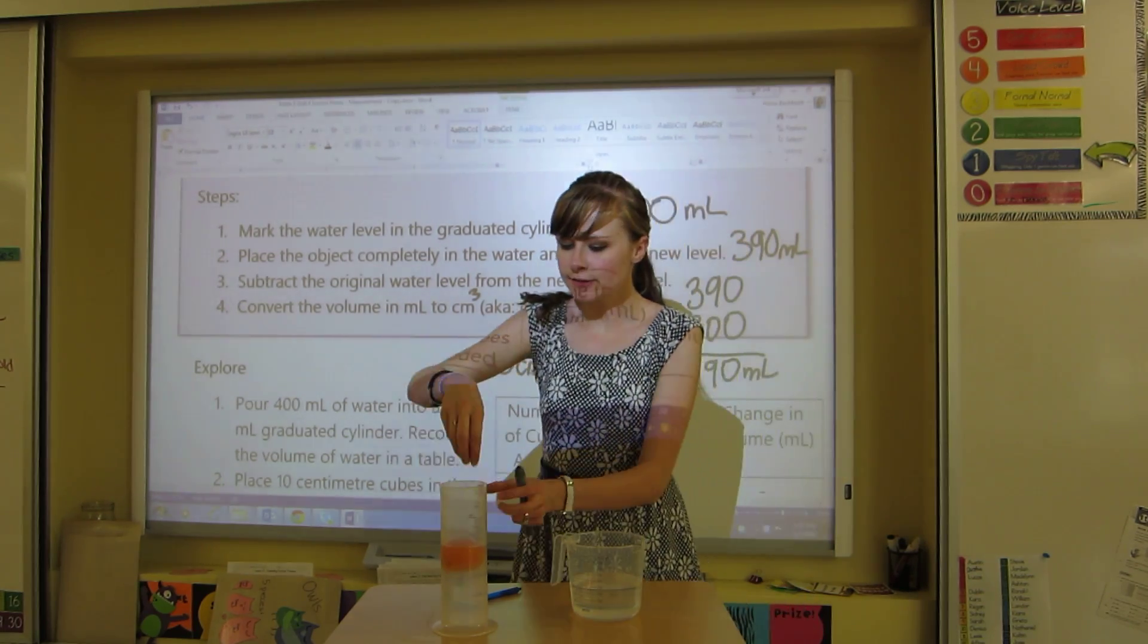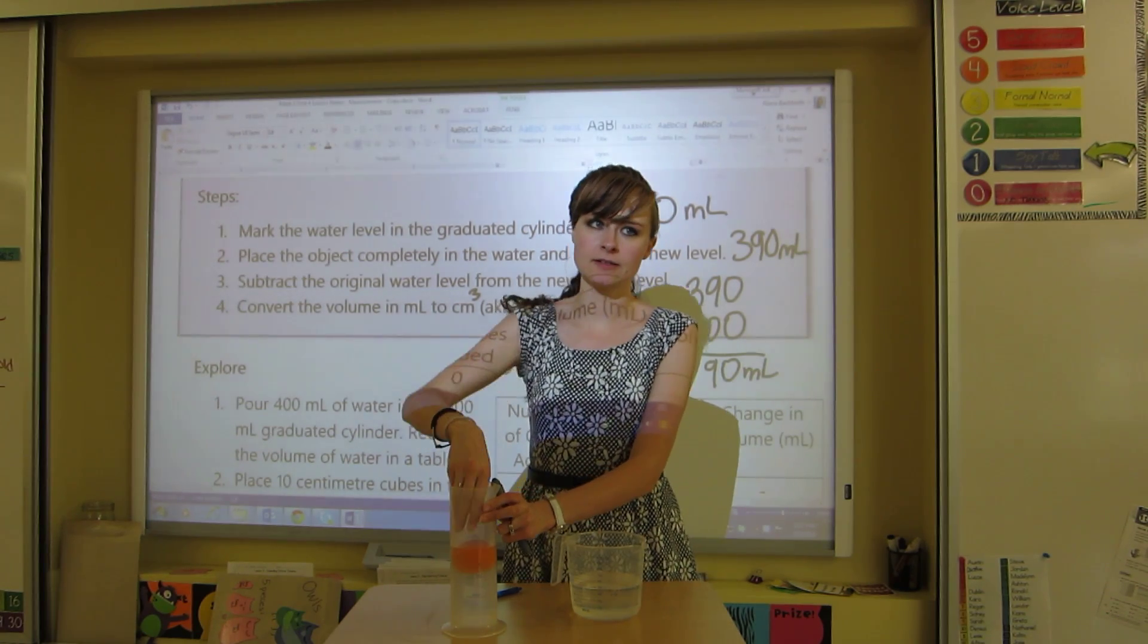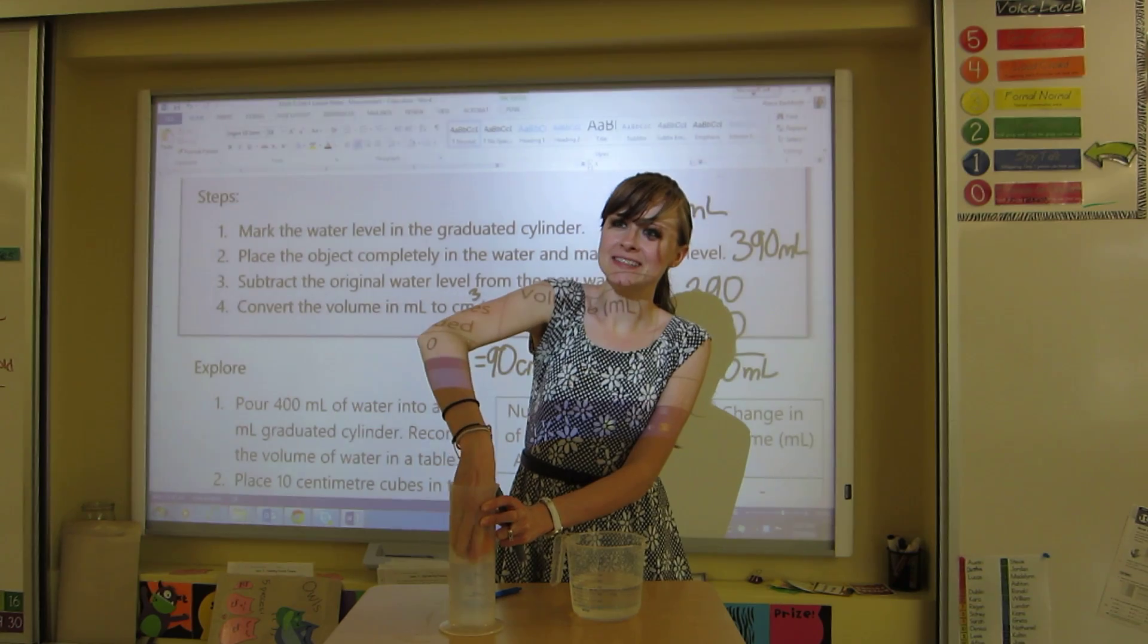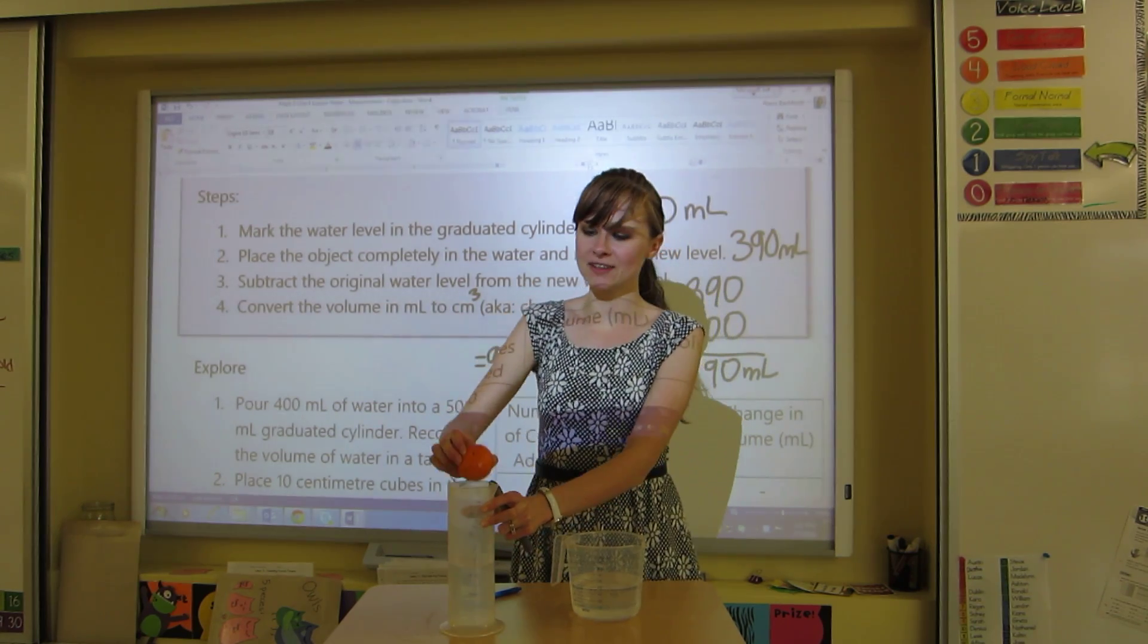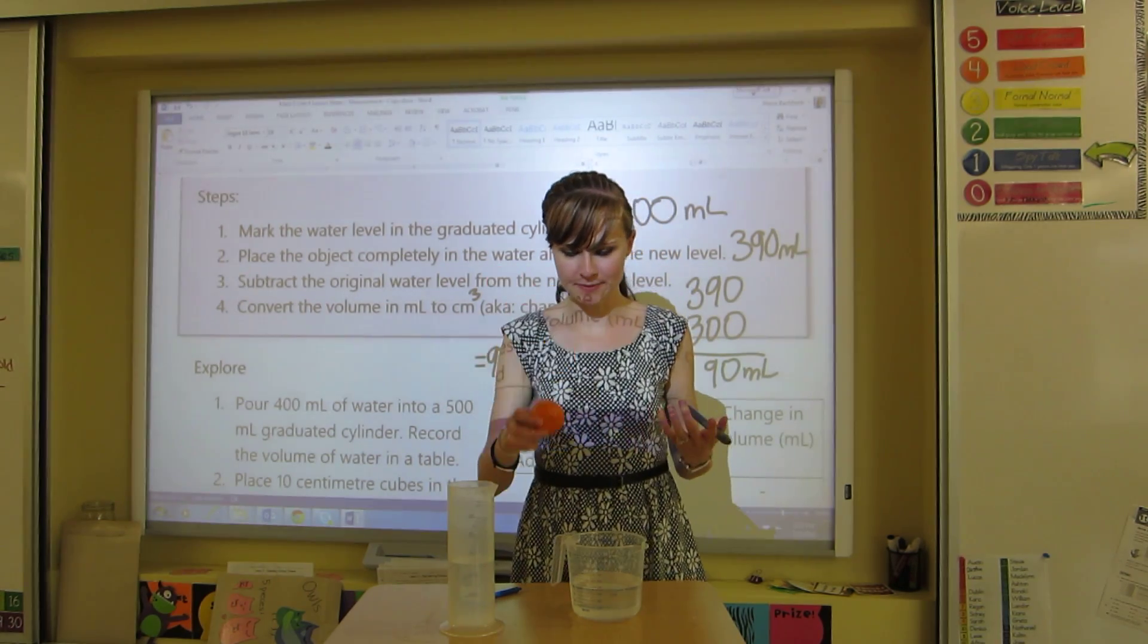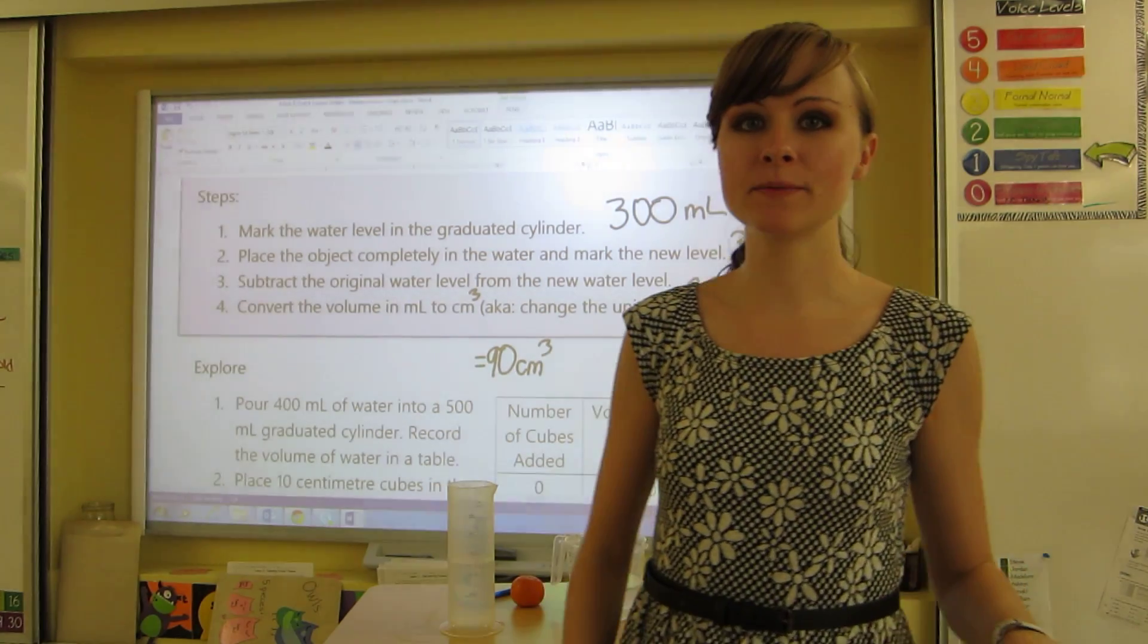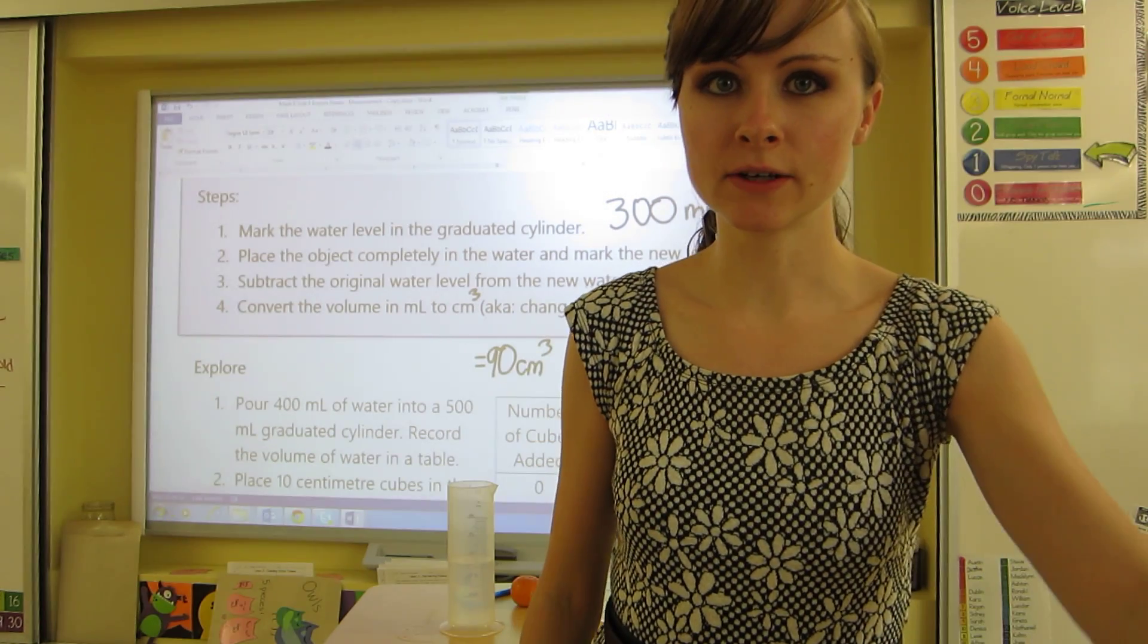And that's how to do it. So you're going to actually be using graduated cylinders and finding objects to put into the graduated cylinder to find the volume. And then I'll dry it off. I'm not just going to leave it. Alright. You can read the rest of the page for the rest of your assignment.